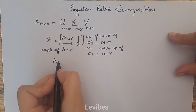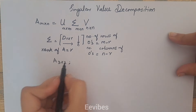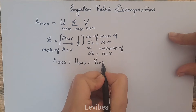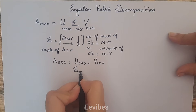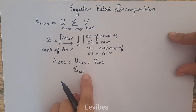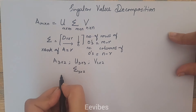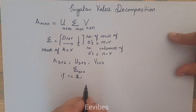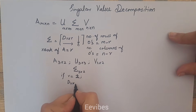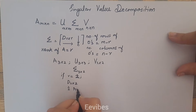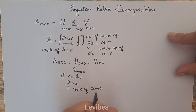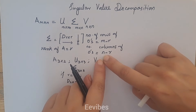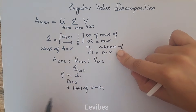So let's say the order of matrix A is 3×2. Then the dimension of U will be 3×3, the dimension of V will be 2×2, and the dimension of Σ will be 3×2, meaning three rows and only two columns. If the rank of this matrix is 2, then D will be 2×2, and we introduce just one row of zeros and no column of zeros, because N minus R equals 2 minus 2 equals 0.